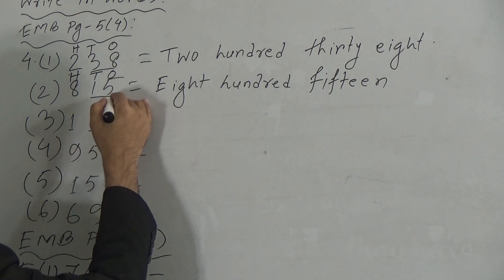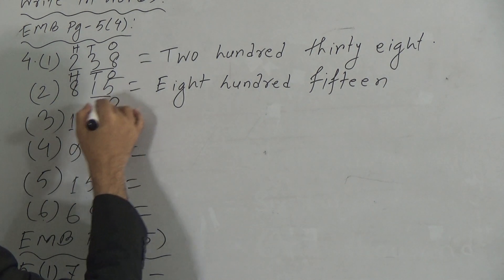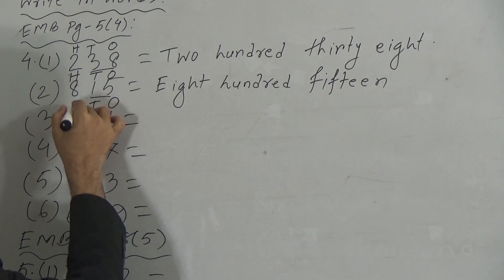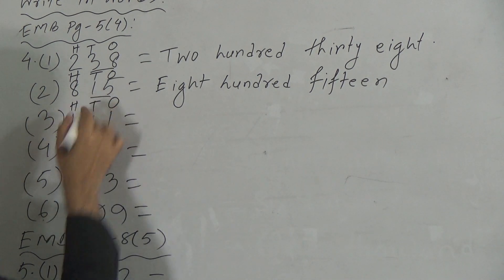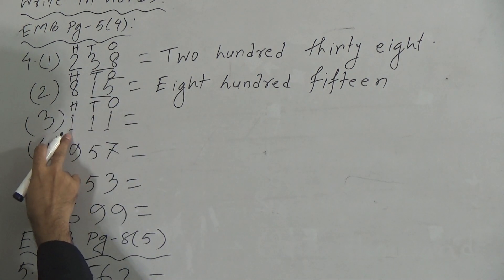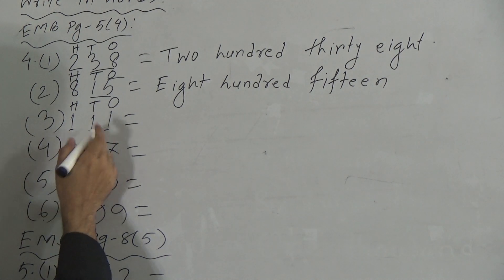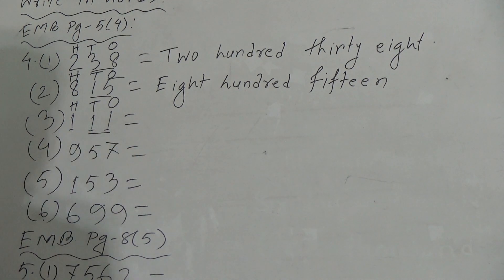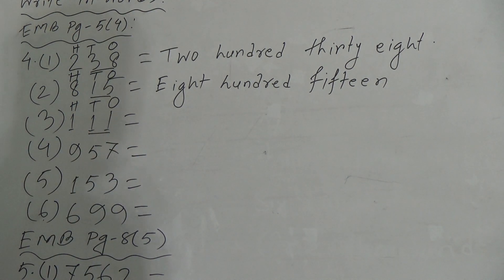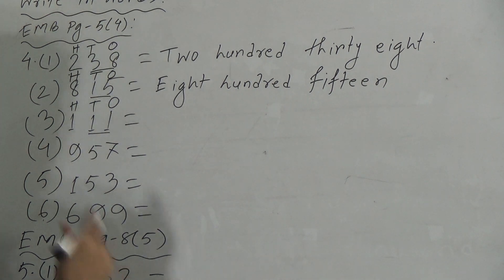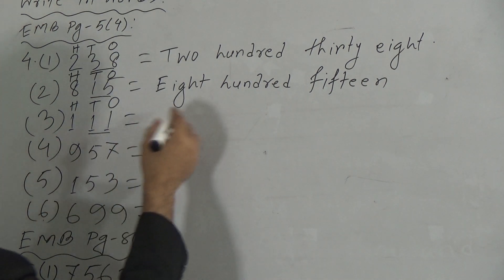Then, for the next number: 1's, 10's, and 100's. This is 100, and 1 and 1 means 11. So this gives us 111.